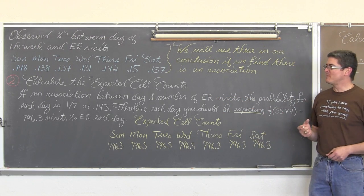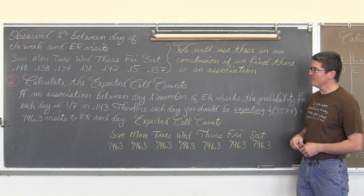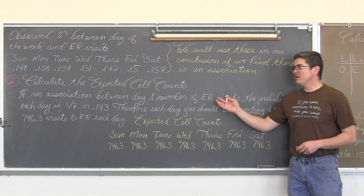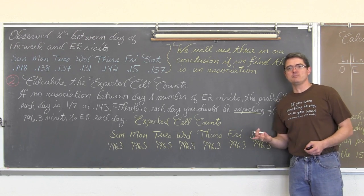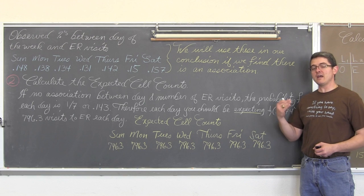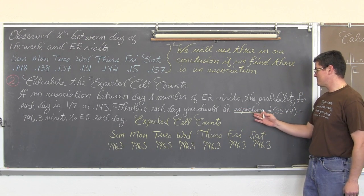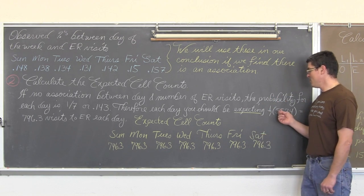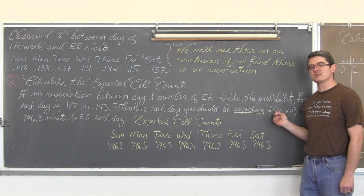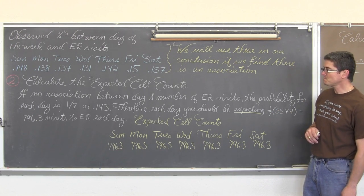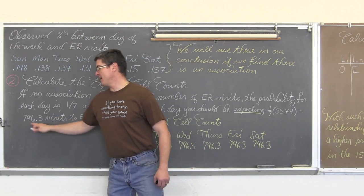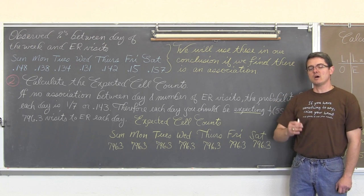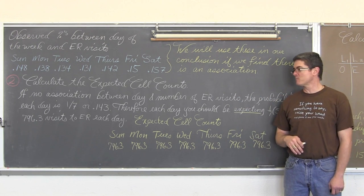We are going to calculate the expected cell counts for each of those cells in the table. If there is no association between the day and the number of ER visits, the probability for each day is one-seventh. Or we should be seeing that 14.3% of all ER visits occur on every day of the week. So we are going to find these expected values by doing one-seventh, or 0.143, and multiplying it by the number of total observations, which was again 5574. This comes up to an expected cell count of 796.3.